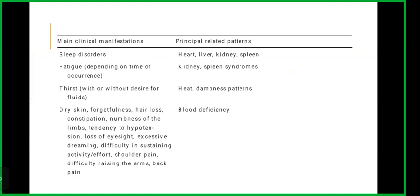If there are sleep disorders, that is a pattern of the heart, liver, kidney and spleen. If there is fatigue, depending on time of occurrence, it could be kidney and spleen syndromes. For thirst with or without desire for fluids, those are heat and dampness patterns.